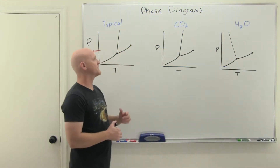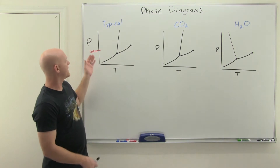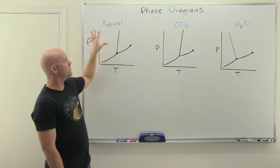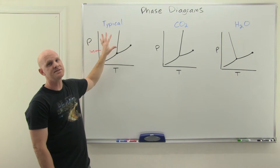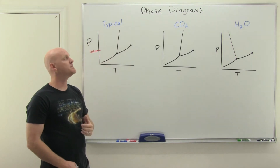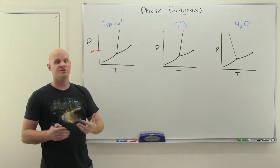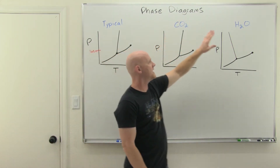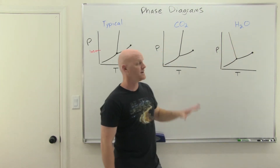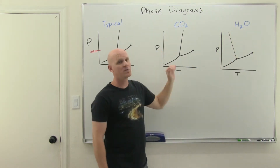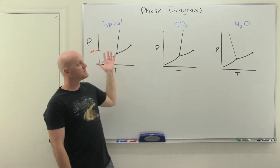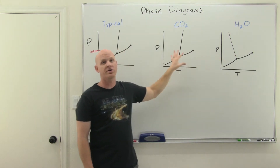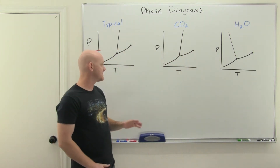So when we take a look at these phase diagrams, it's a plot of pressure versus temperature. We're going to look at what it looks like for a typical substance, and then compare and contrast that to a couple of unique substances: carbon dioxide and water. You definitely need to be familiar with what a typical substance's phase diagram looks like, but also how CO2 and water differ from that typical substance.